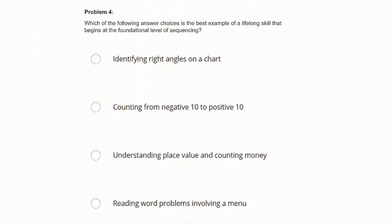Problem 4: Which of the following answer choices is the best example of a lifelong skill that begins at the foundational level of sequencing? Let's look at the first one, identifying right angles on a chart. Sure, that is something you should be able to do, but that's not typically something you do on a day-to-day basis. So I would not consider that a lifelong skill. So I'm just going to eliminate that as a great option choice.